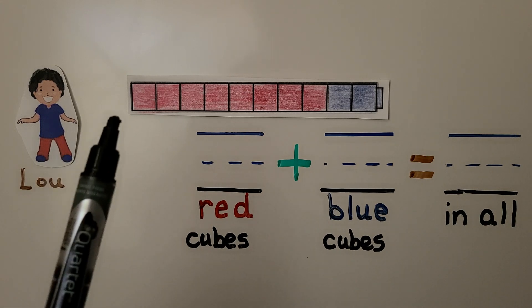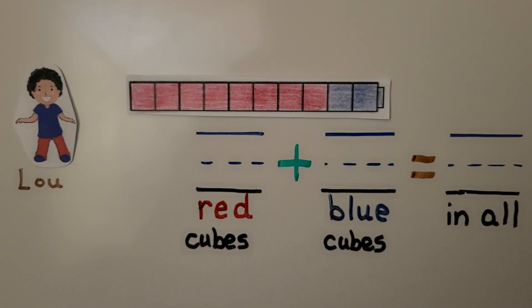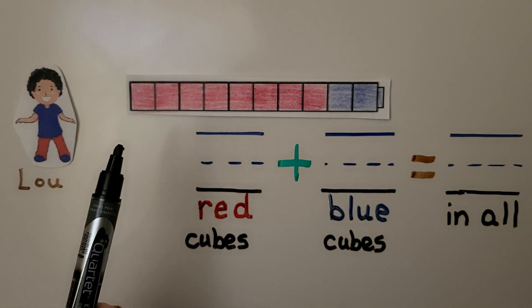Lou made a cube train with 10 cubes. Eight are red cubes and the rest are blue. How many cubes are blue? So how many blue cubes did he need to make 10 in all?